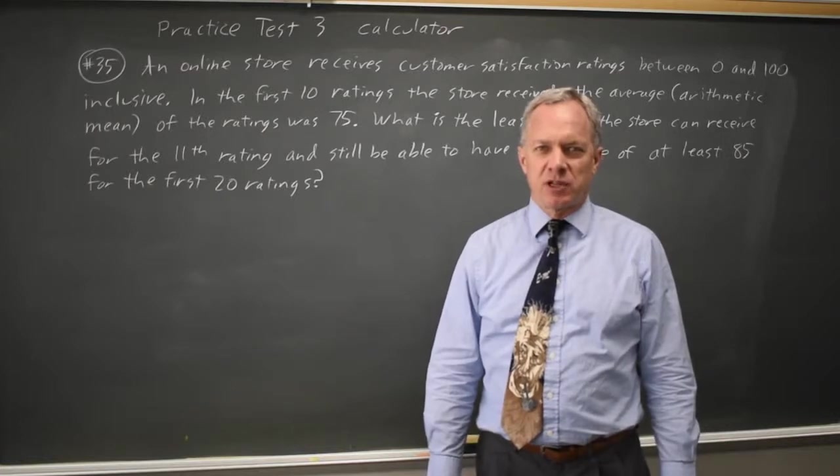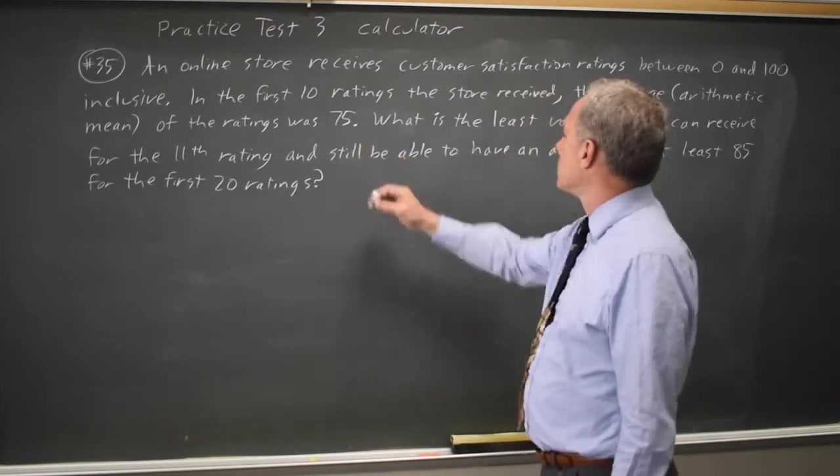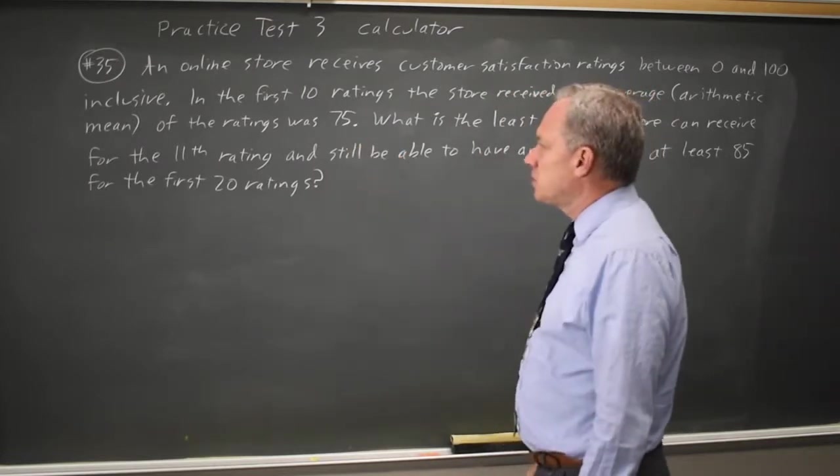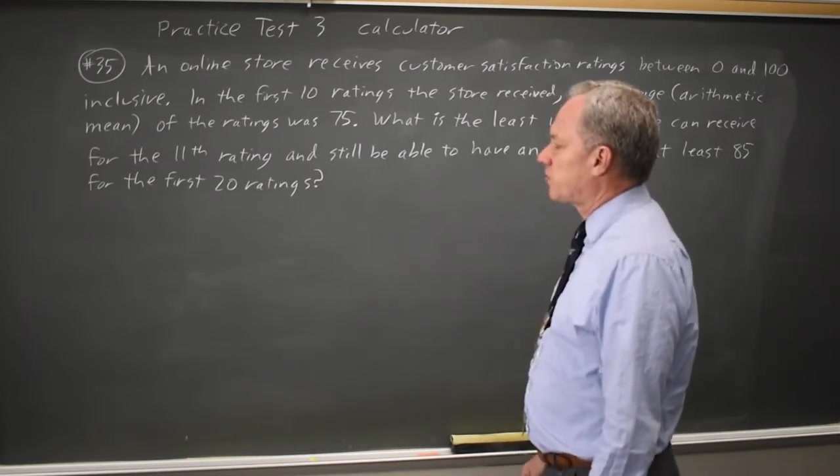This is calculator question number 35. We're told this store averaged 75 on the first 10 ratings and they're asking what's the lowest score they can get on their 11th rating and still be able to have an average of at least 85 for their first 20 ratings.